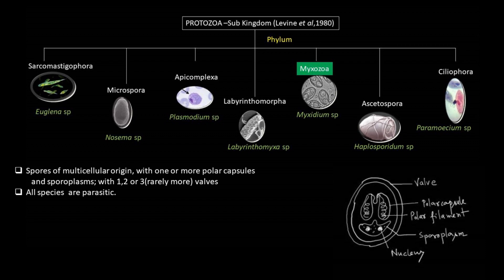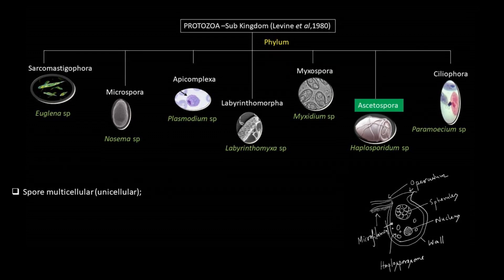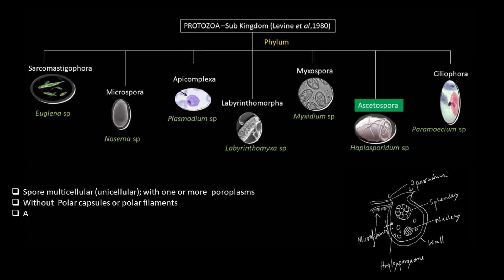Then comes Acetospora: spores multicellular, though unicellular may also be present. With one or more sporoplasms, without any kind of polar capsules or polar filaments. All are parasitic.